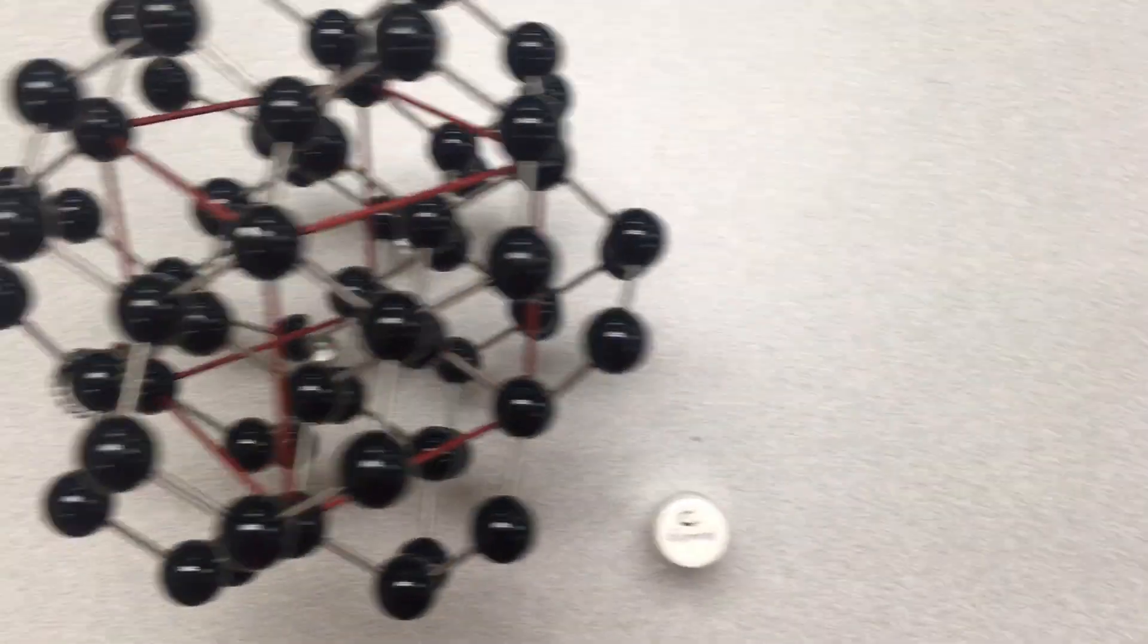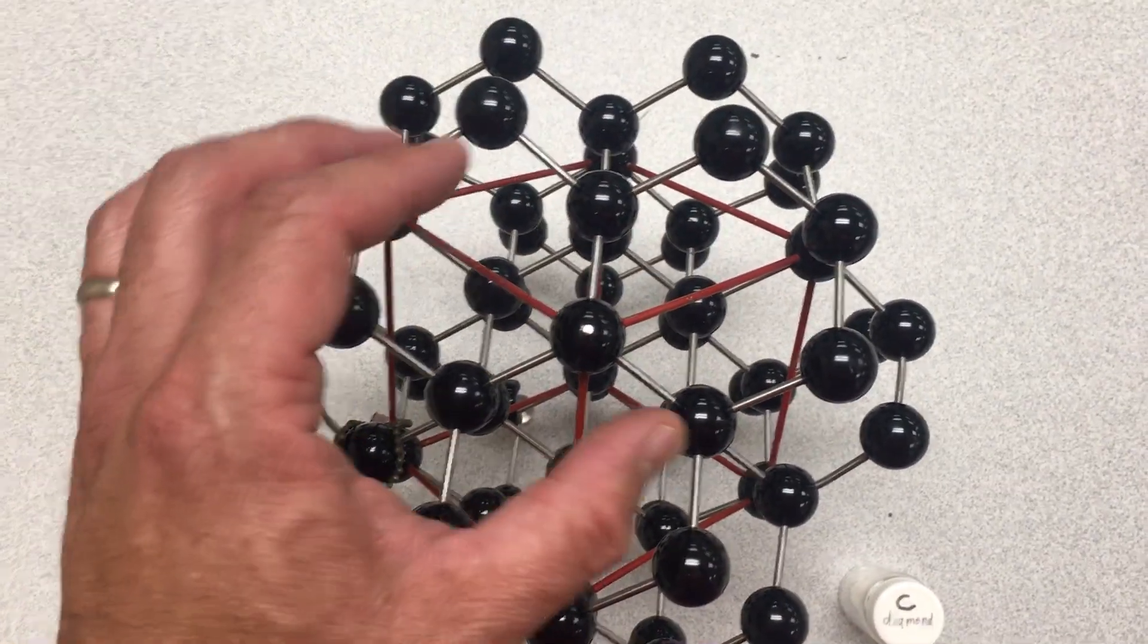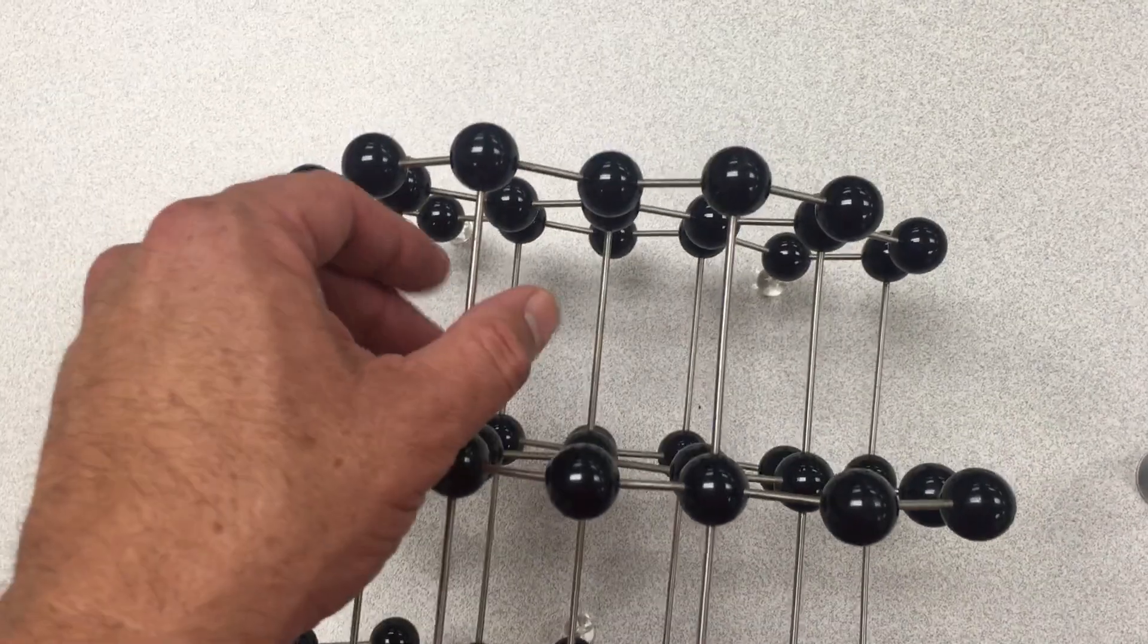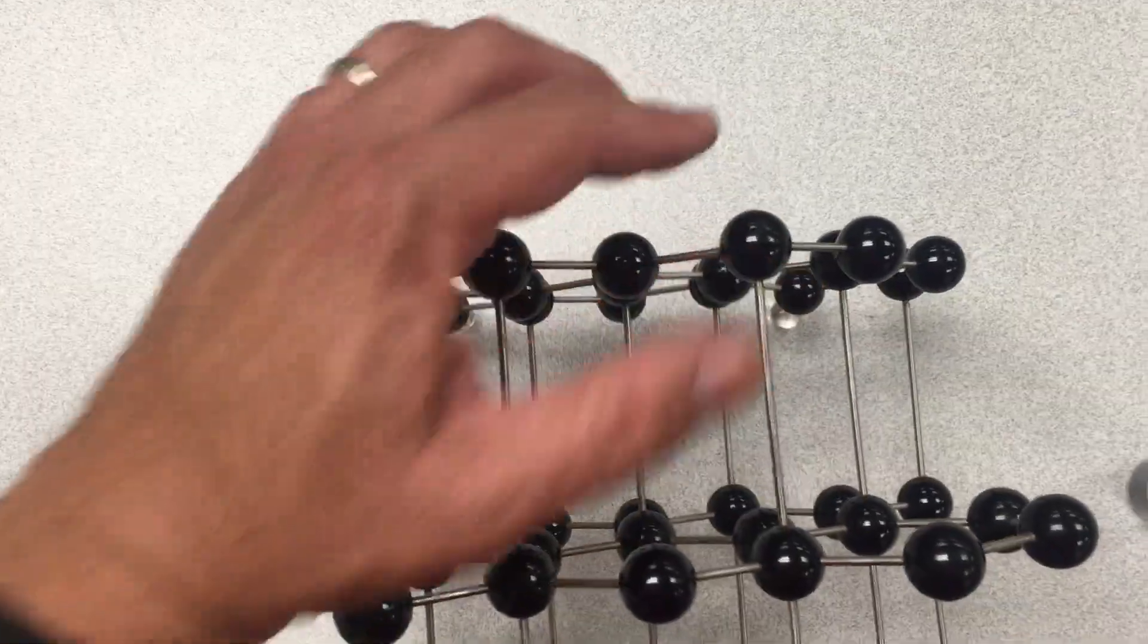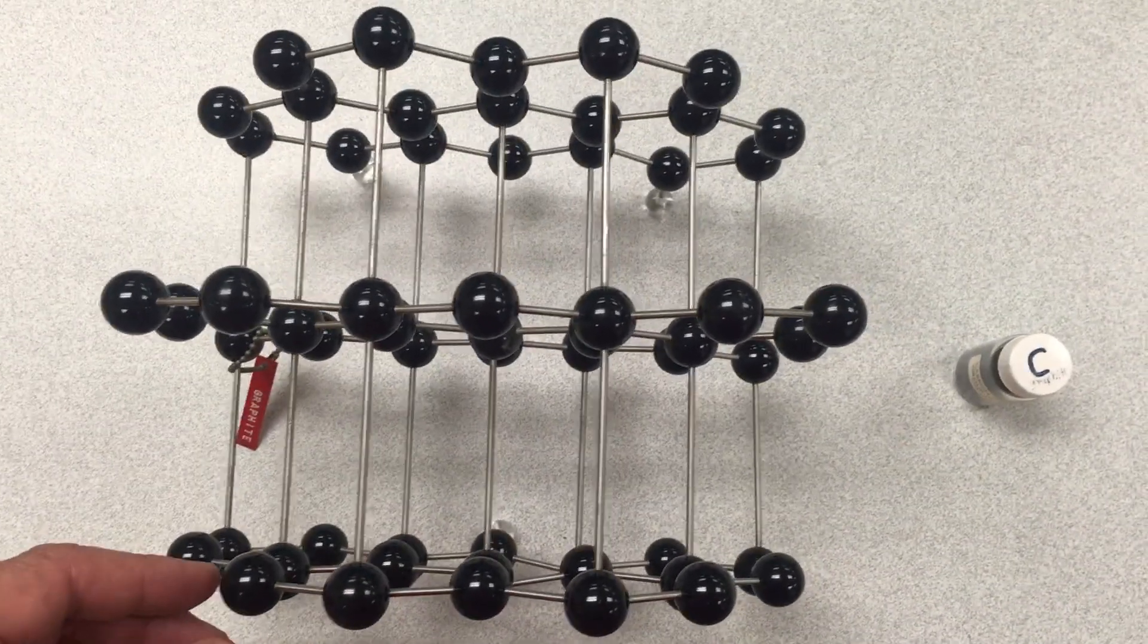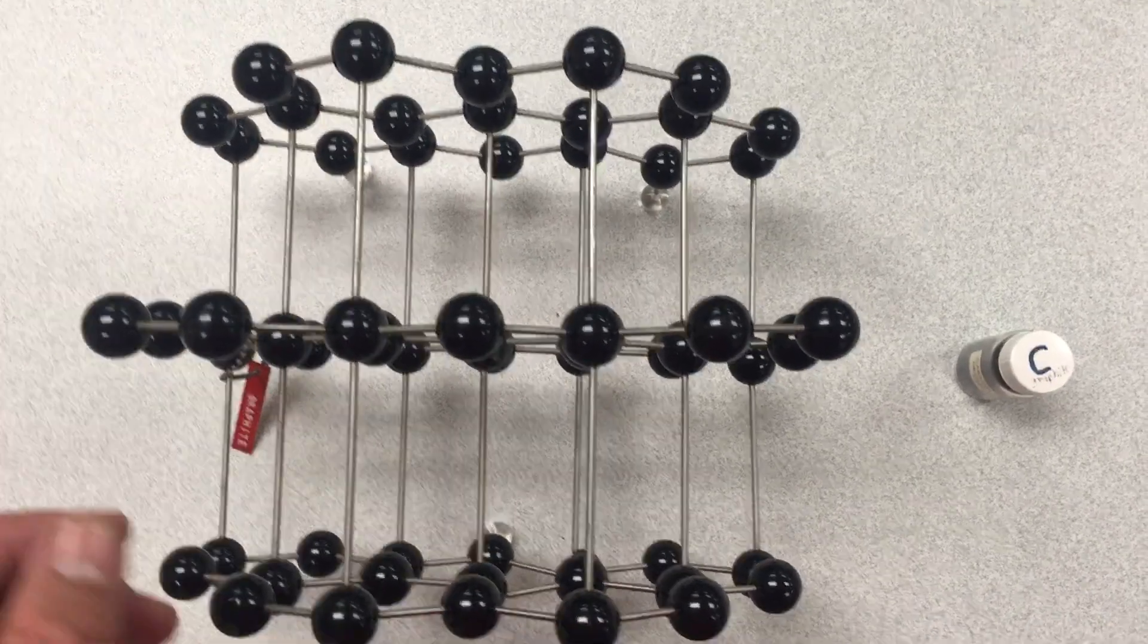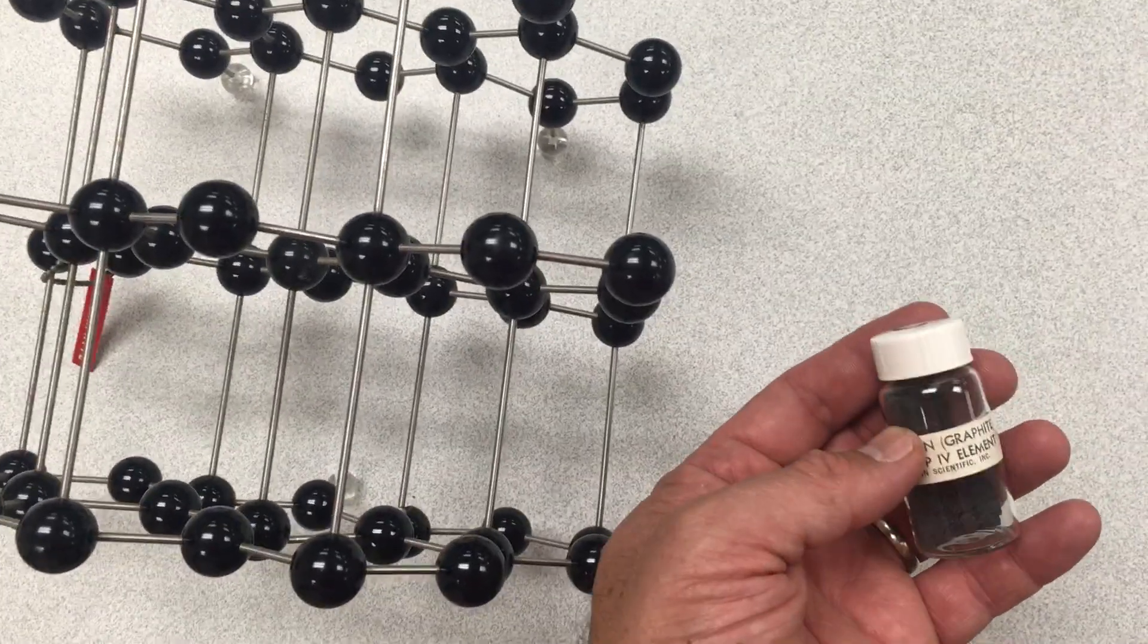And whereas diamond has this bonding arrangement where there's bonds all over the place, diamond tends to be a very hard material. Graphite, on the other hand, tends to be very soft because there's really actually very weak interactions between these sheets of carbon. And so these graphite layers can actually slide past each other pretty readily, which is why graphite can sometimes be used as a lubricant and why it's used in pencils. Here's a sample of some graphite powder.